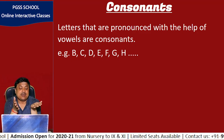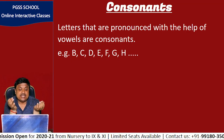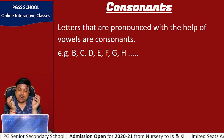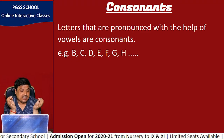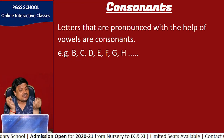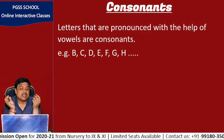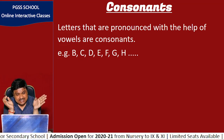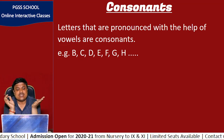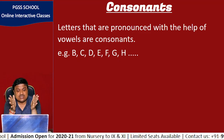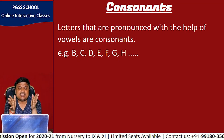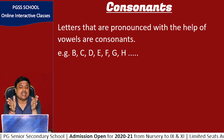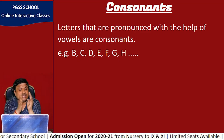For example, the letter B — you can see that a vowel E is used to help pronounce it. So for all consonants, we require vowels for their pronunciation.